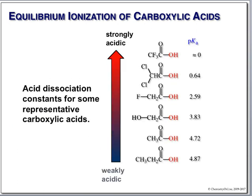Here's the whole set. Electron-withdrawing groups stabilize the anion, giving lower pKa (stronger acid). Dichloroacetic acid, fluoroacetic acid, glycolic acid — all electron withdrawing. If you stick an alkyl group on that donates electrons, the pKa goes up. Simple concept.